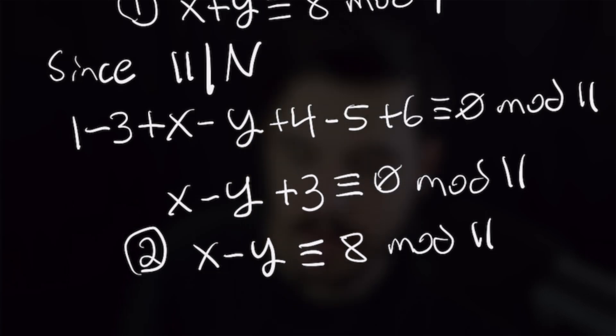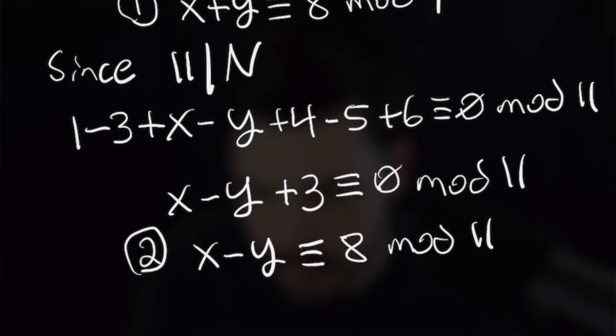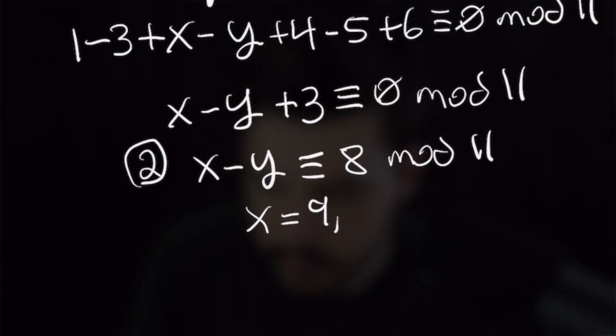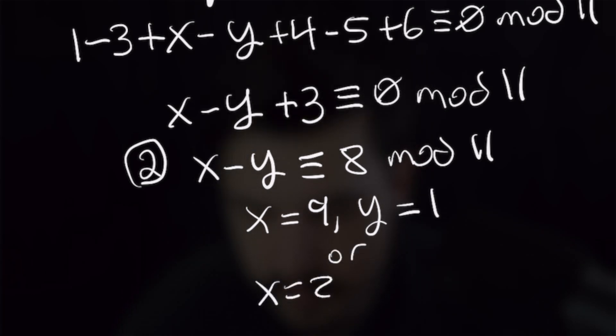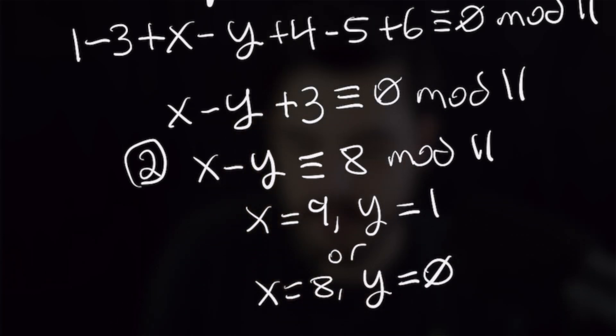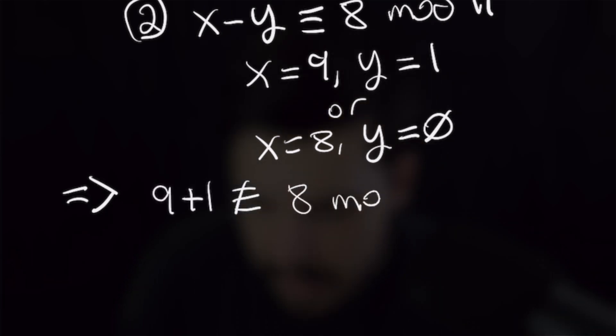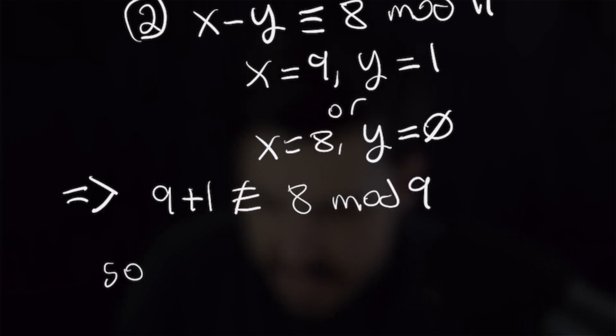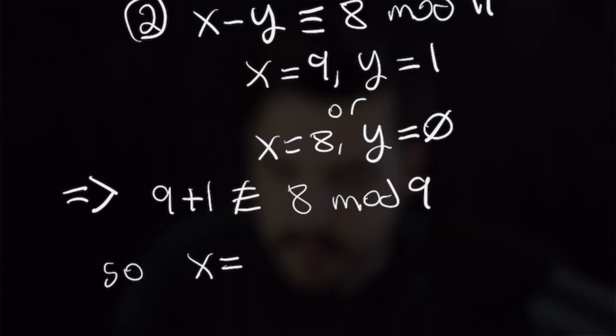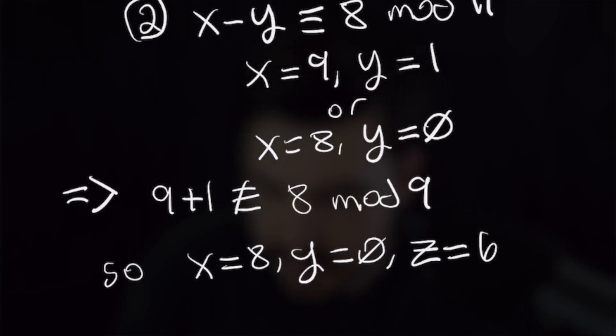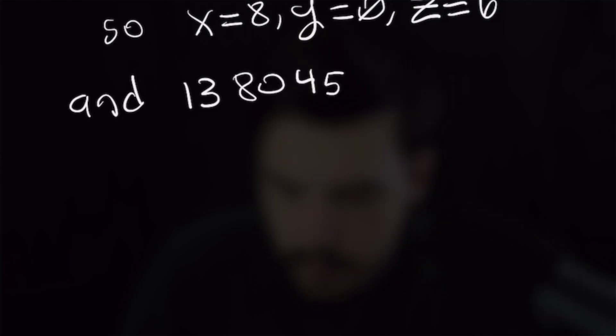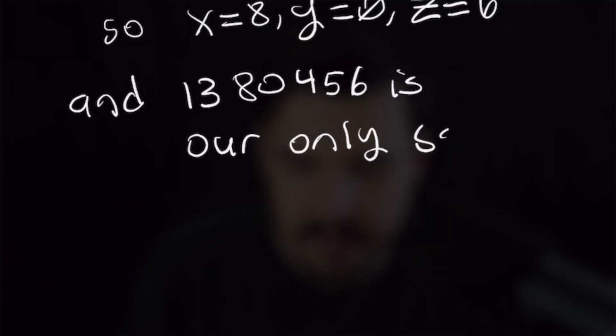From x − y ≡ 8 mod 11, there are only two possibilities for single digits: x = 9, y = 1, or x = 0, y = 0. Checking the divisibility rule for 9, we find x = 8 and y = 0 satisfy x + y ≡ 8 mod 9. So the only solution is n = 1380456.